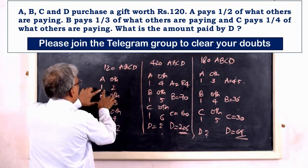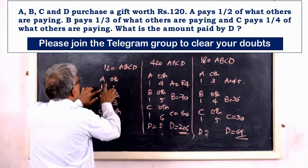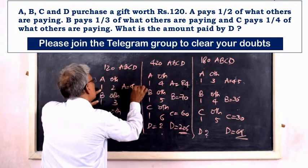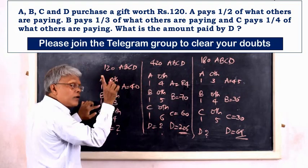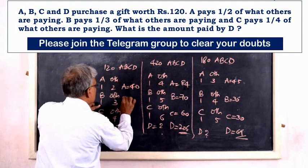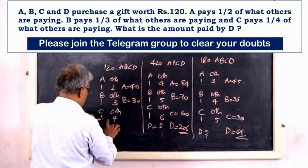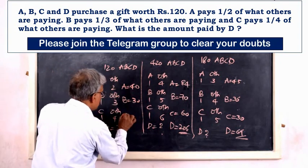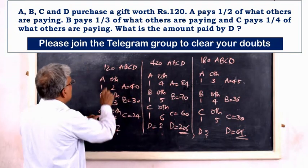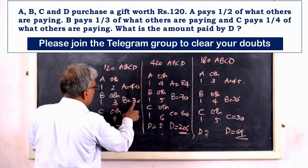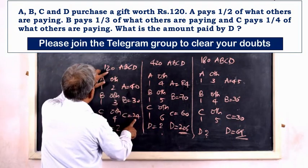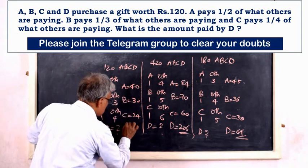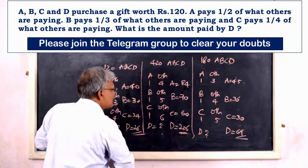Simple: total denominator for A is 3; 120 divided by 3 equals 40, so A equals 40. Total for B is 4; 120 divided by 4 equals 30, so B equals 30. Total for C is 5; 120 divided by 5 equals 24, so C equals 24. Total of A, B, C is 94; D equals 120 minus 94, so D equals 26.